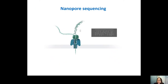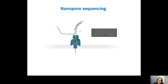So what is nanopore sequencing? In this way of sequencing, a strand of DNA is guided to a pore — a biological pore. When this strand of DNA is passing through the pore, there will be a difference in the current, and this difference can be measured and translated into a DNA sequence.